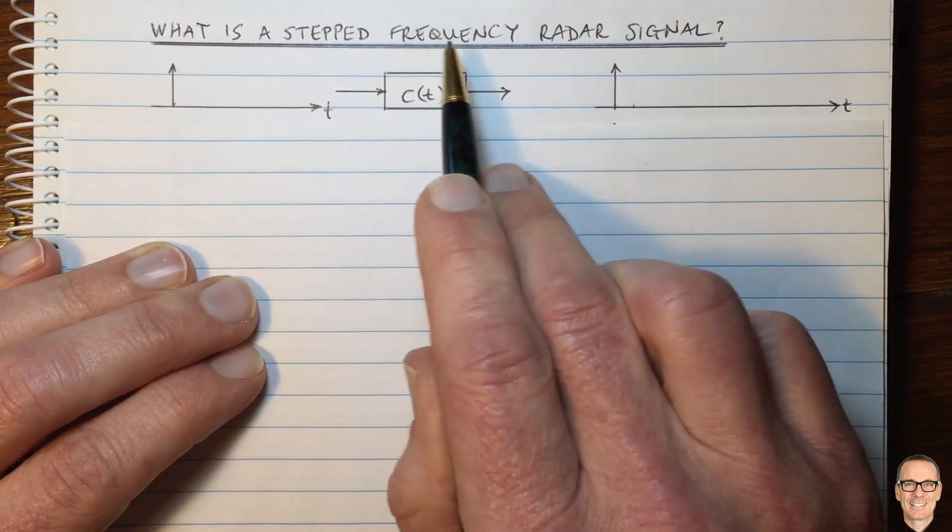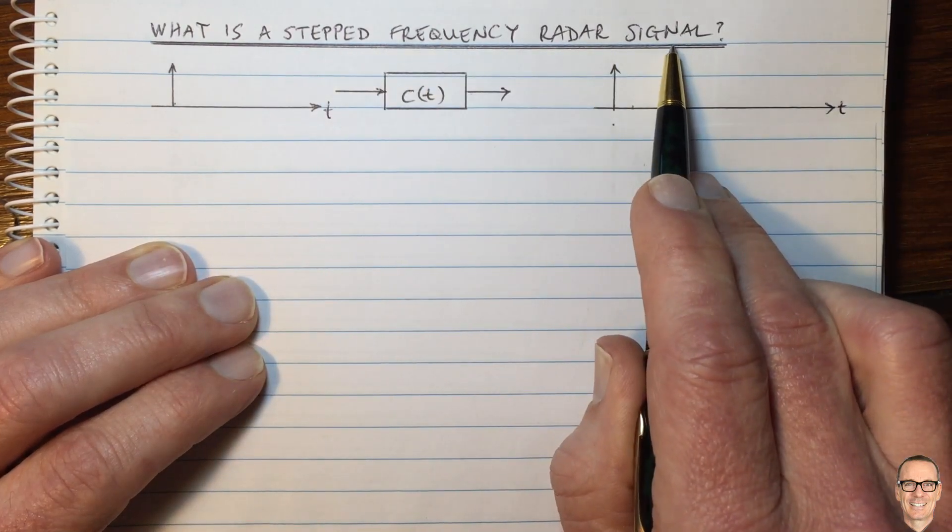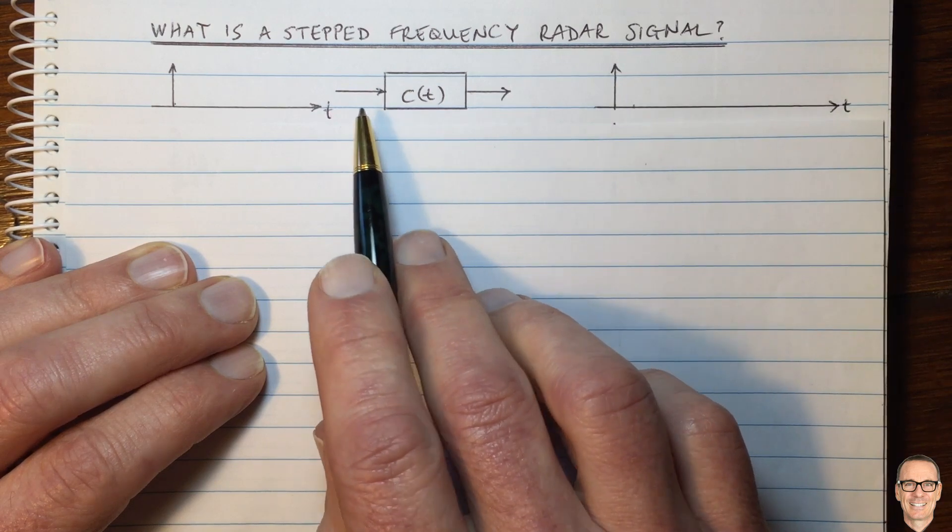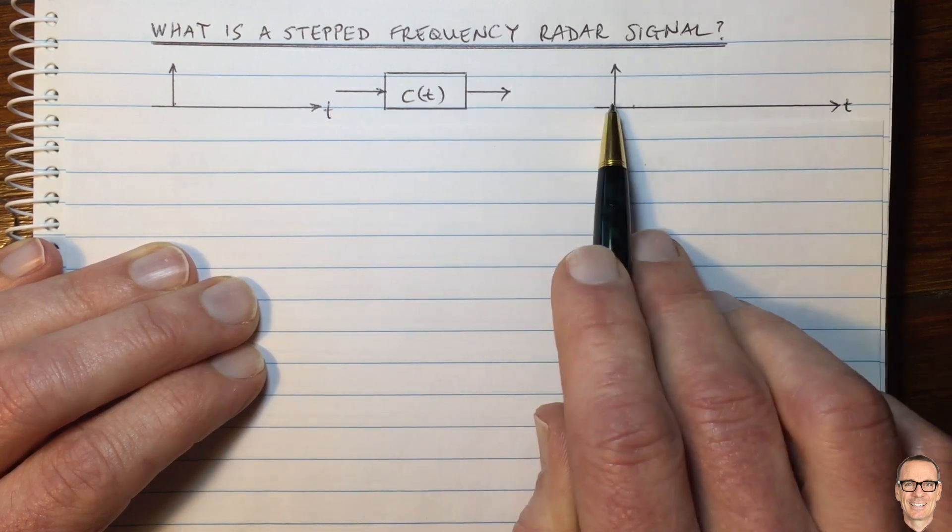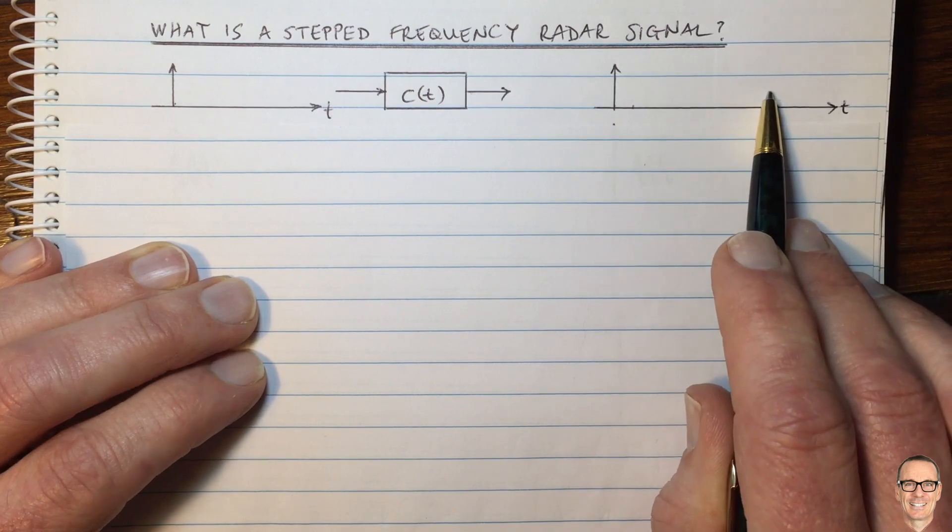What is a stepped frequency radar signal? Well, radar involves sending a signal and having reflections come back and be received.